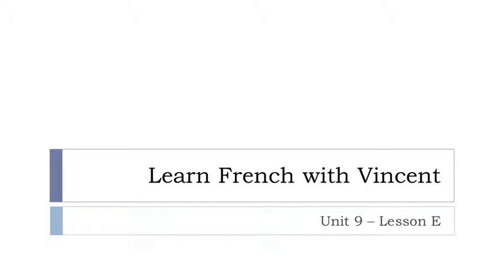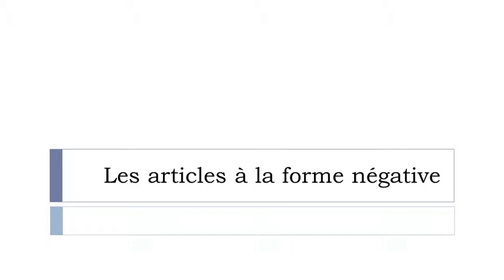Bonjour à tous and welcome to Learn French with Vincent. This is unité neuf, leçon E. In this lesson we'll see together something quite useful: les articles à la forme négative, because it can be tricky in some cases. Students have been asking me: are they transformed or do they stay the same if you put the sentence in the negative form?